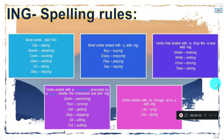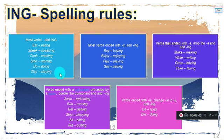Now here are the ING spelling rules. In general, with most verbs we simply add -ing: stay→staying, do→doing, start→starting, cook→cooking, eat→eating, speak→speaking. With verbs ending in -Y, we also just add -ing: buy→buying, enjoy→enjoying, play→playing.